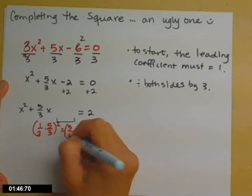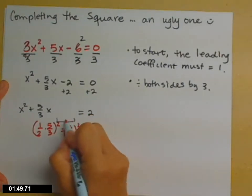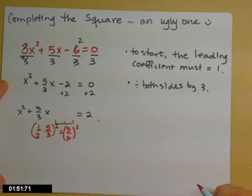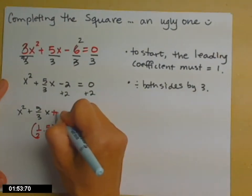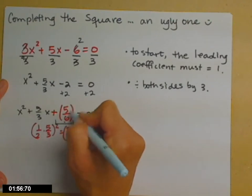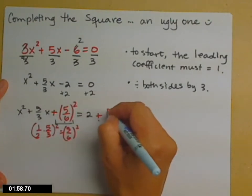So that's 5 sixths squared and that goes here and then I need to put it on both sides so that I balance. Plus 5 sixths squared on both sides.